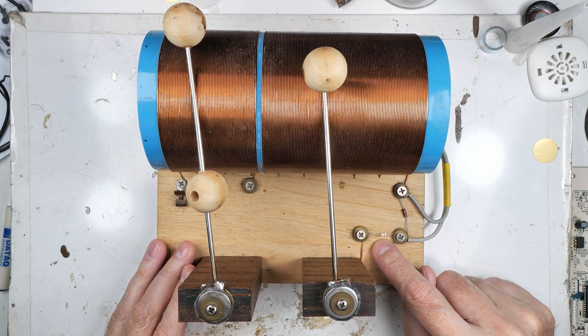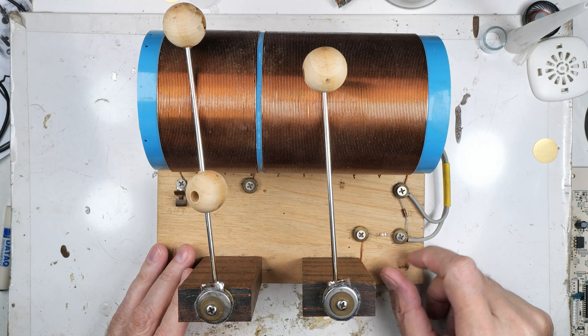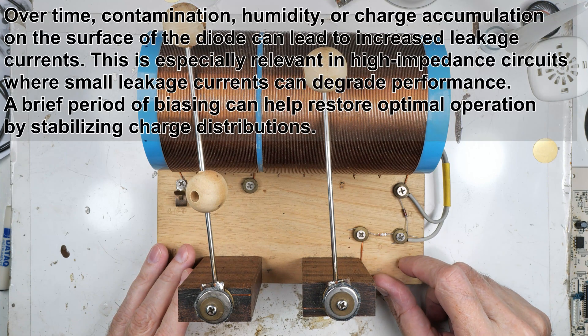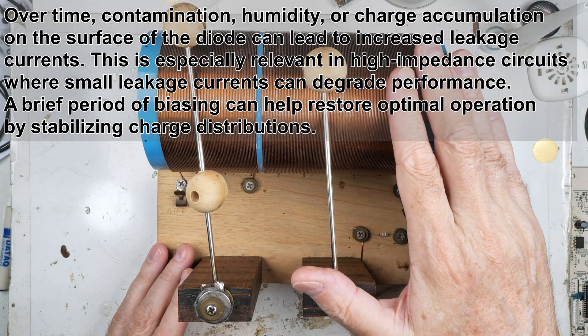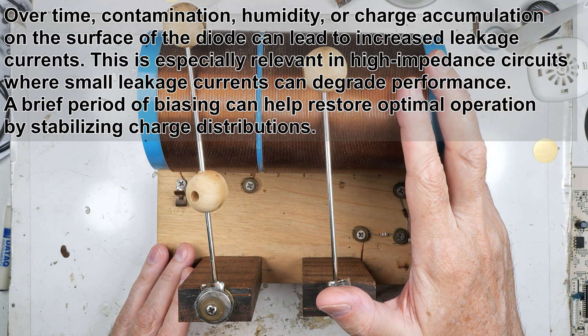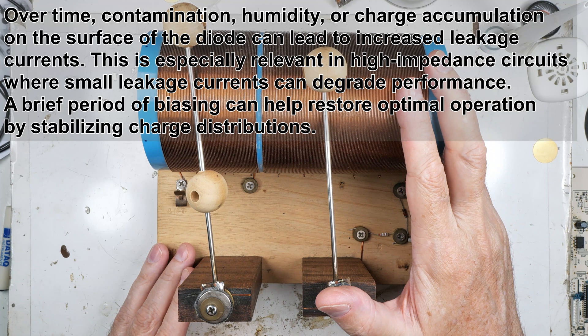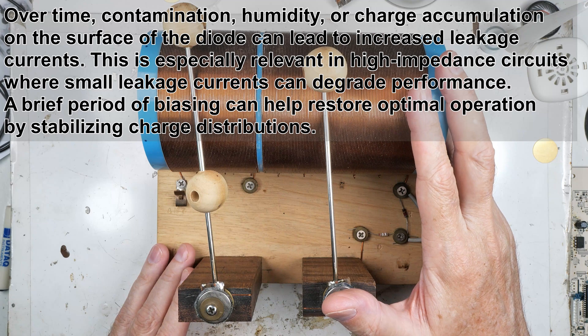So one of the things said that it's called surface and bulk leakage effects. Over time, contamination, humidity, or charge accumulation on the surface of the diode can lead to increased leakage current. This is especially relevant in high impedance circuits like this one, where small leakage currents can degrade performance. A brief period of biasing can help restore optimal operation by stabilizing charge distributions.